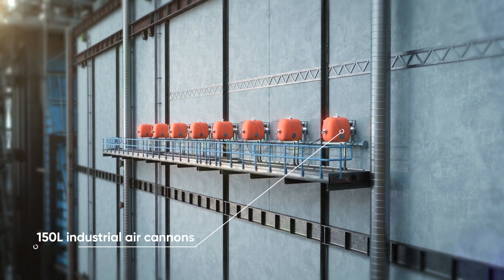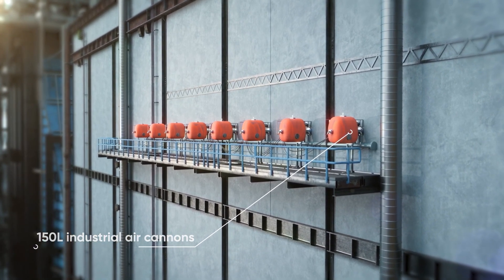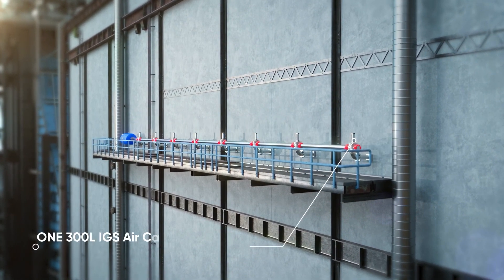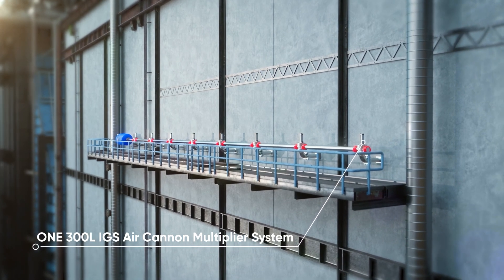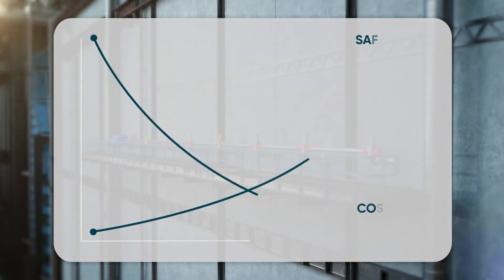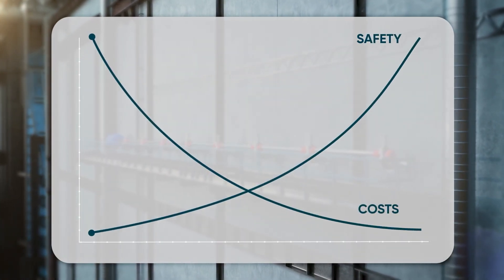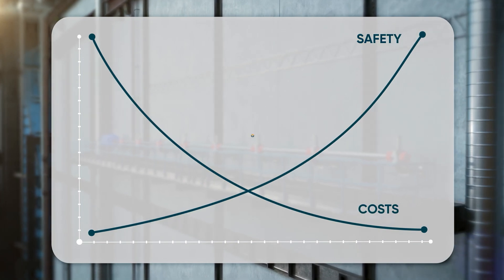Eight 150-liter industrial air cannons can be replaced by one 300-liter IGS Air Cannon Multiplier System. More economical, provides more cleaning power, and safer and easier to maintain.